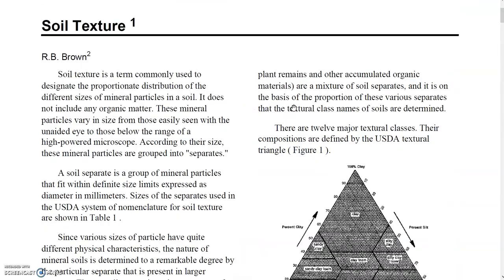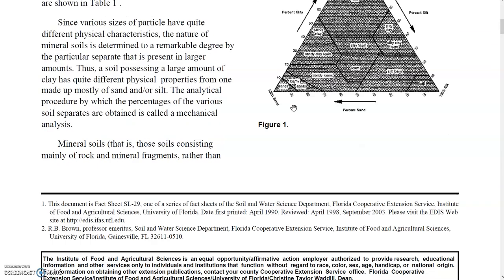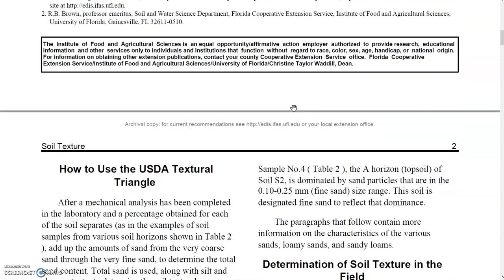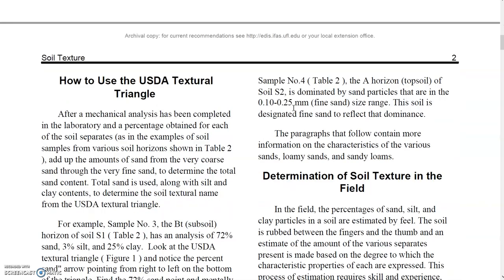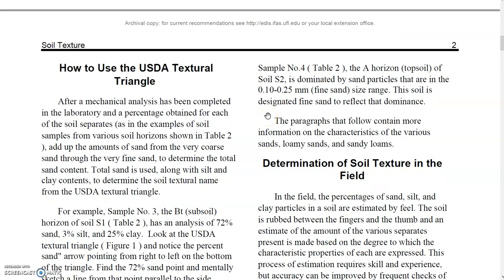Soil texture is very important for various purposes. For irrigation, we need to determine the water holding capacity, which majorly depends on soil texture. In the construction field, coarse sand is used to measure bulk density, which also depends on soil texture. Bulk density of sandy soil is very suitable for construction.